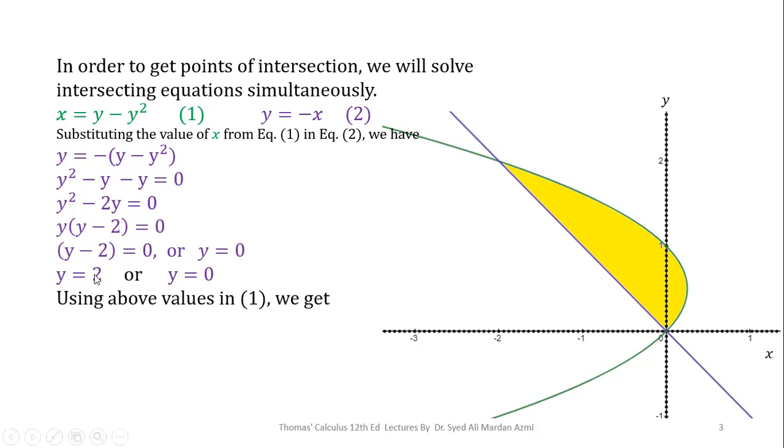Now, we can use these values in equation 1. We can get the value of x as x = -2 and x = 0. So, our points of intersection are (0,0) and (-2,2). You can also see from the figure when x = -2, y = 2 is our point of intersection. But for the purpose of accuracy, we have simultaneously solved it.